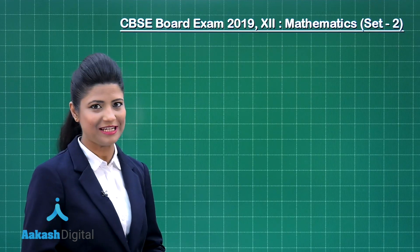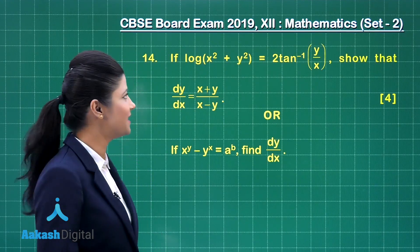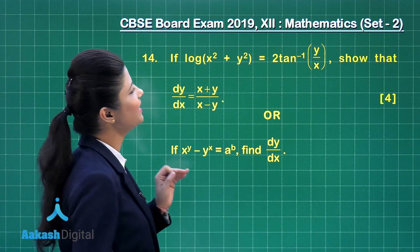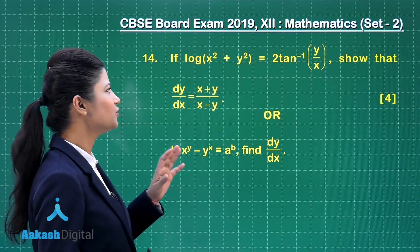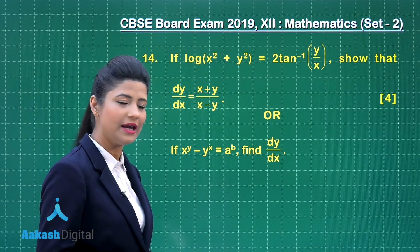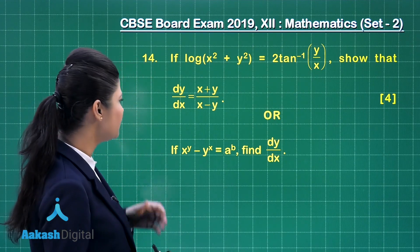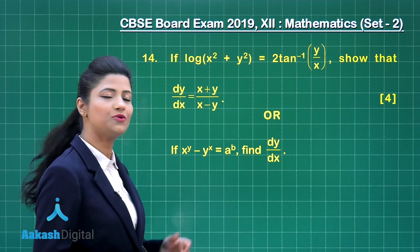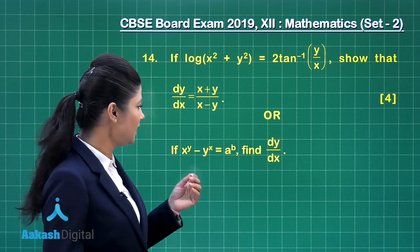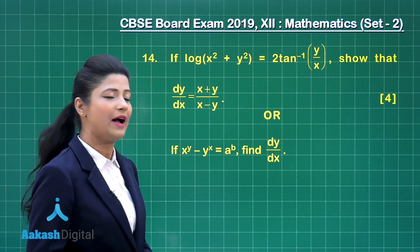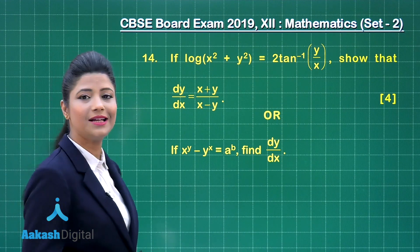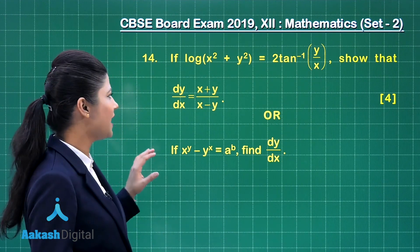Now let us discuss question number 14. It states that if log of x squared plus y squared is twice of tan inverse of y upon x, show that dy/dx is equal to x plus y upon x minus y. The second choice of this question is: if x raised to the power y minus y raised to the power x is equal to a raised to the power b, find dy/dx. This is a very interesting question related to derivatives and it carries 4 marks.